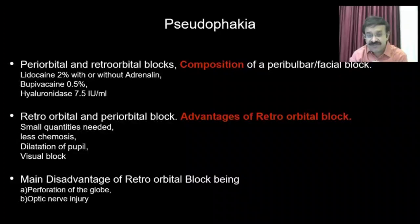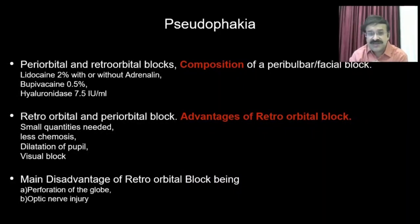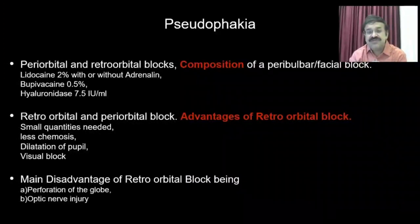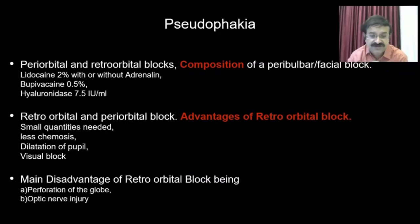Regarding retrobulbar versus peribulbar block: the retrobulbar block was previously given but has been discontinued due to serious disadvantages — globe perforation and optic nerve damage. The advantages of retrobulbar block were that only a small amount was needed, it produced less chemosis, it caused pupil dilation, and it blocked vision well by depositing the anesthetic around the optic nerve. Because of the main disadvantage of globe perforation and optic nerve injury — even with a blunt-tipped needle — peribulbar block has now replaced it.